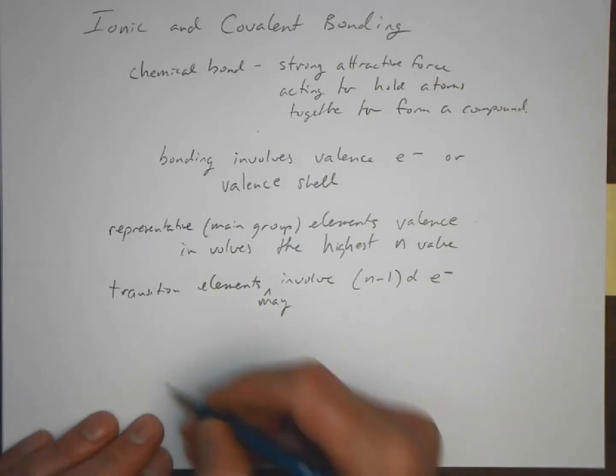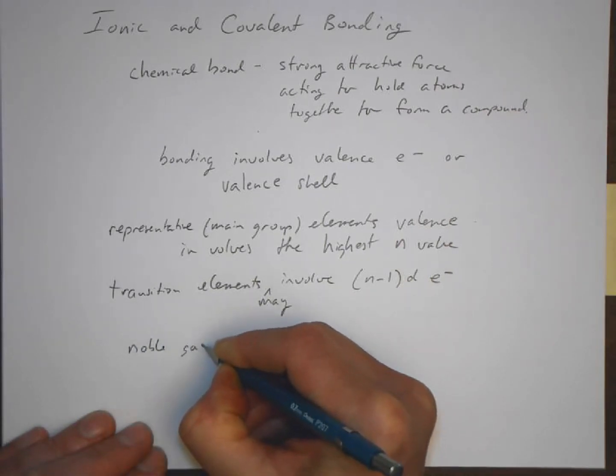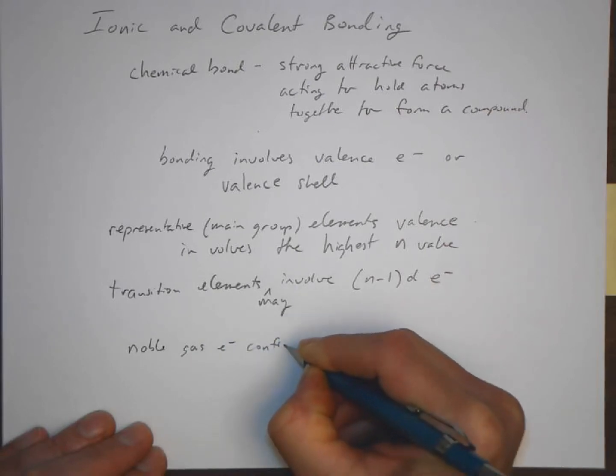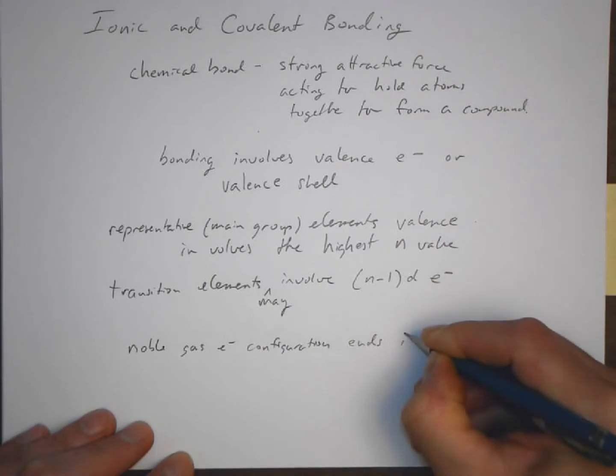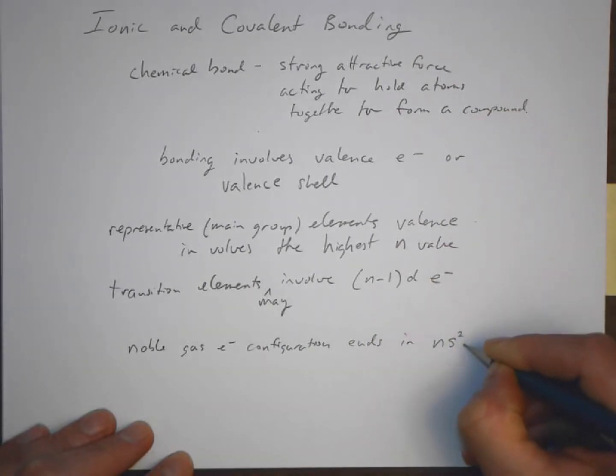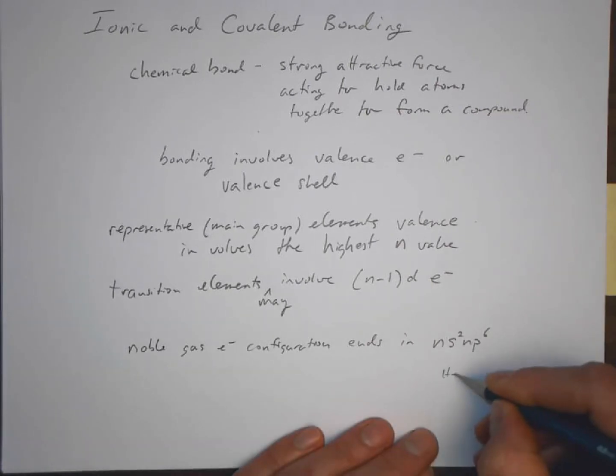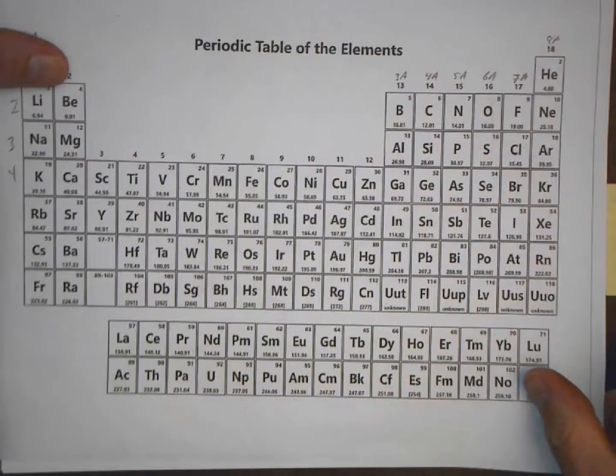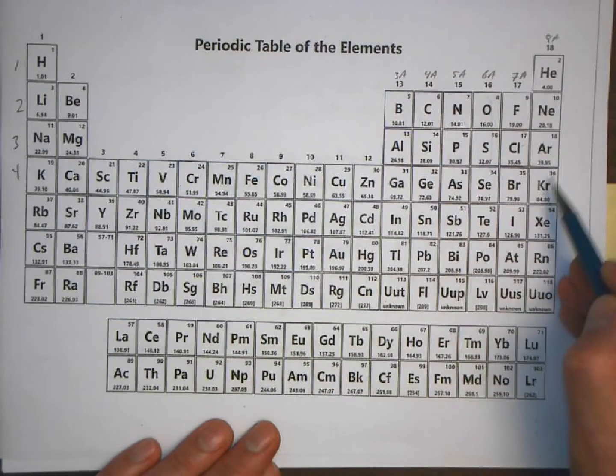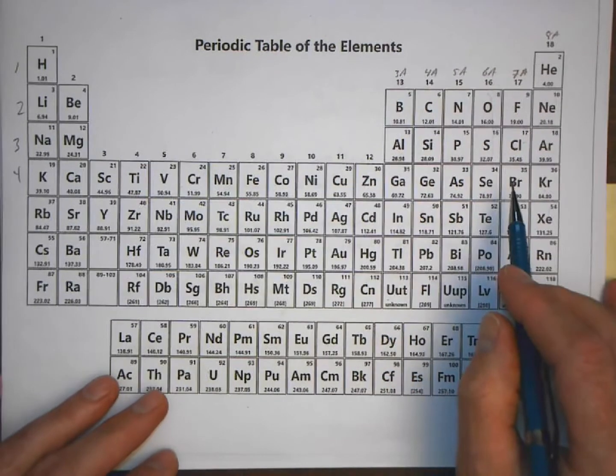As you recall from last chapter, the noble gas electron configuration ends in ns2 and p6. For helium, it's 1s2. But what we're talking about here are, for example, neon, argon, krypton. The electron configurations, the valence electrons, have a filled shell.